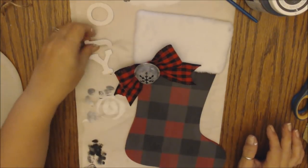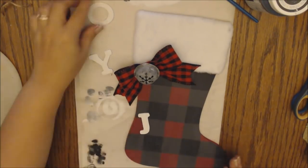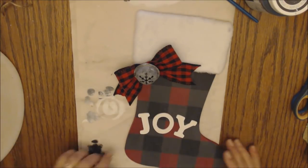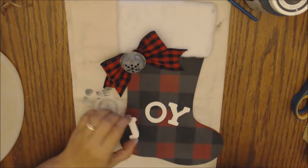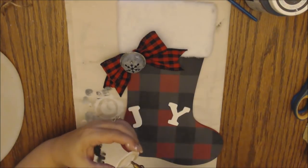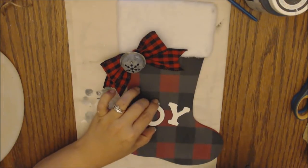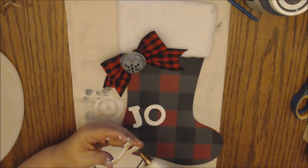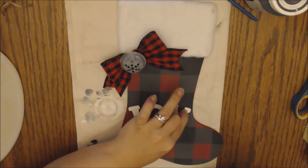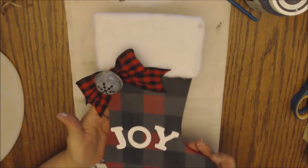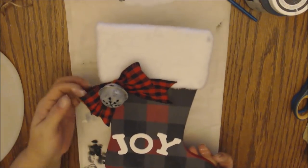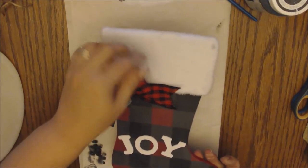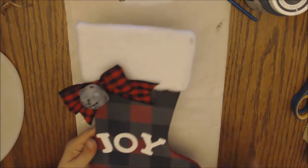Then you just hot glue the bow on to the stocking. And then the bell right on top of the bow in the center there. Now we're going to put our letters on. You just run a bead of hot glue down the center of each of your letters and stick them on there. And that's it, you guys. And I just love the way this turned out. I am beyond happy. It is actually better than it was in my head.